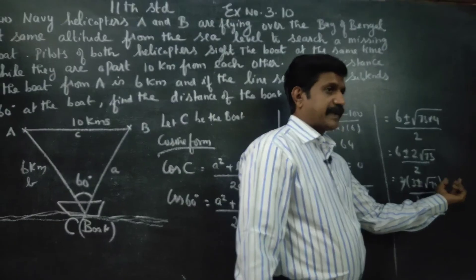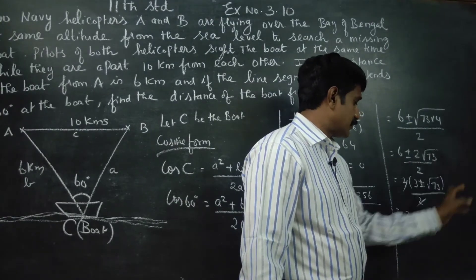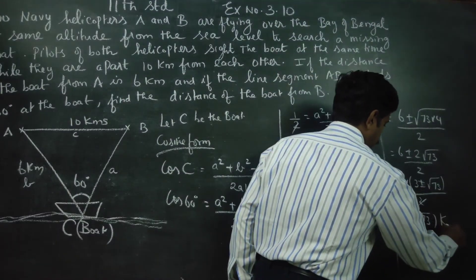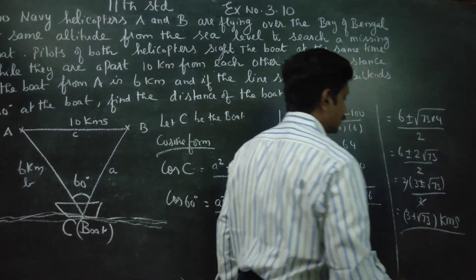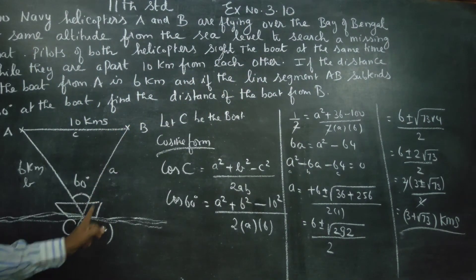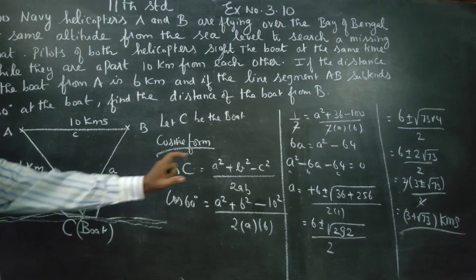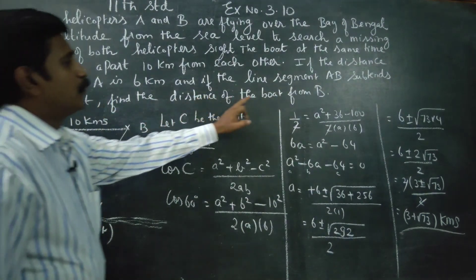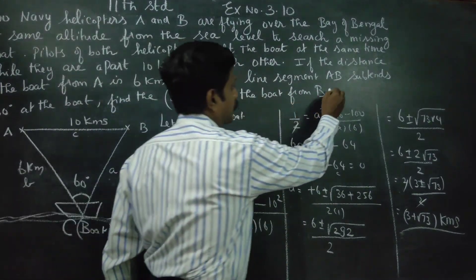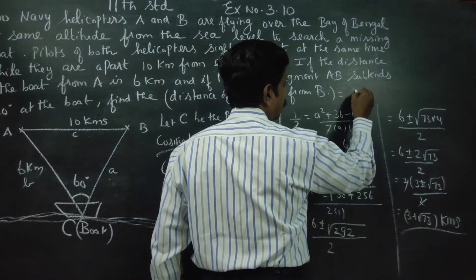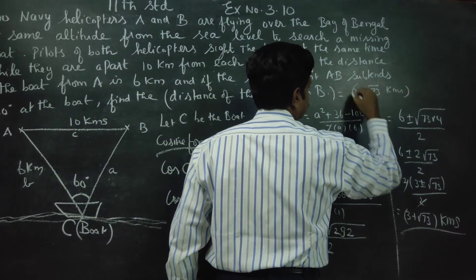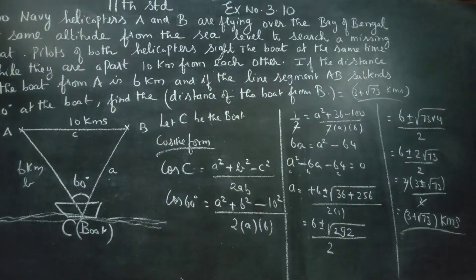So a equals 3 plus root 73 or 3 minus root 73. Since root 73 is approximately 8, the negative value 3 minus 8 equals negative 5 is rejected. Therefore the distance from the boat to helicopter B is 3 plus root 73 kilometers. That is the final answer. Okay, thank you.